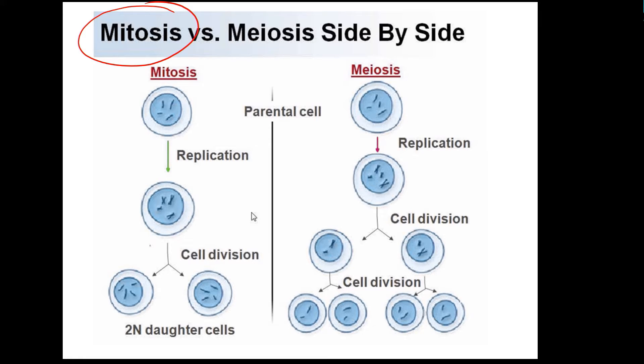Hello and welcome to our second lesson of Life Sciences Grade 12 revision in which we look at chromosomes. This time we're looking at the process of meiosis in detail. At the end of the last segment we looked at mitosis — ordinary cell division which you should be familiar with now — where you have a cell with a certain number of chromosomes.